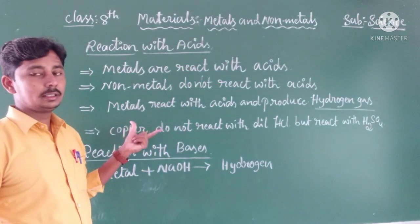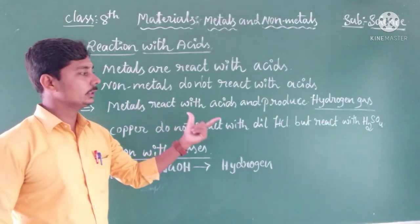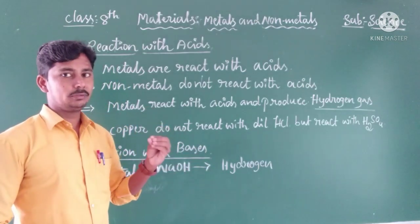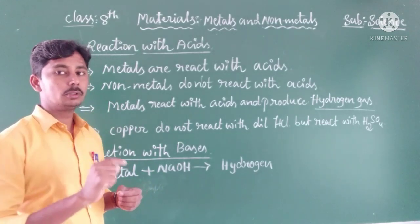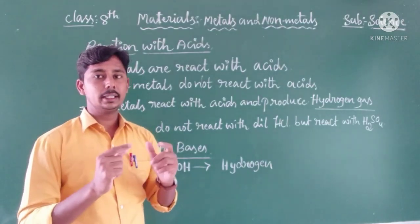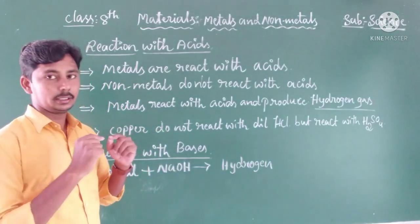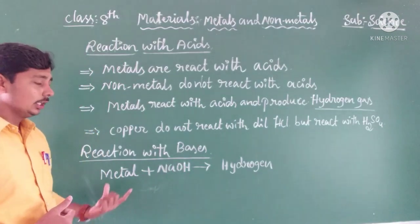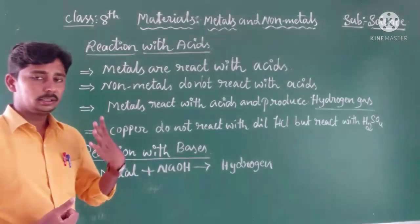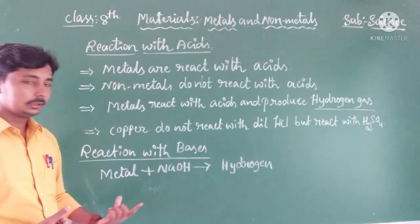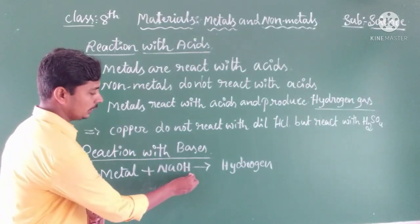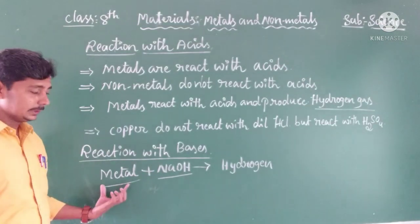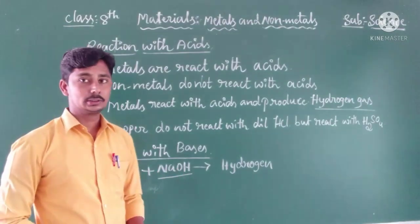We take a matchstick and hold it near the test tube where metals are reacting with acid. The matchstick gives a pop sound. That pop sound indicates that hydrogen gas is being produced — it tells us that metals are reacting with acids and releasing hydrogen gas. This is a very important chemical property of metals.